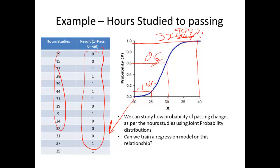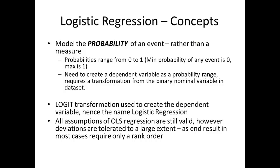Again, a few concepts of logistic regression: we try to model the probability of an event. The measure is always zero and one, but the probabilities will always range from zero to one. So minimum probability of any event is zero, the max is one. We need to create the dependent variable as a probability range, and this requires a logit transformation from the binary nominal variable in the regression. A logit transformation is required on the dependent variable - hence the name logistic regression.